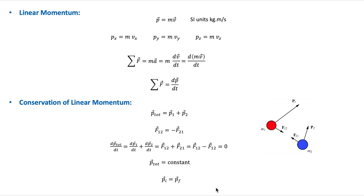Now let's consider the law of conservation of linear momentum. It states that if the net external force acting on a system equals zero — so the system is isolated — and if there is no mass exchange with the surroundings — so the system is closed — then the total linear momentum of the system remains constant. To show this, let's consider an isolated system consisting of two particles where the only forces acting are internal forces.